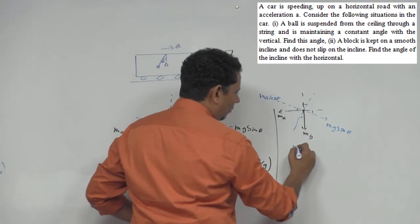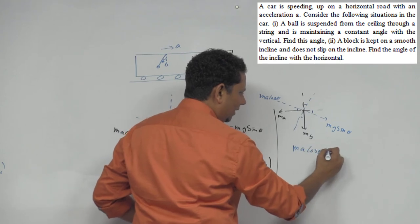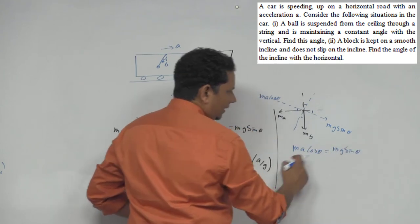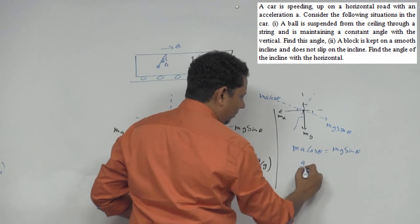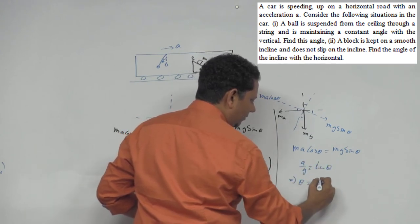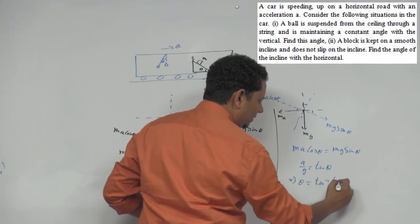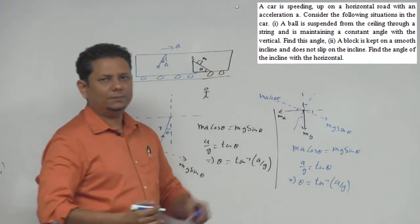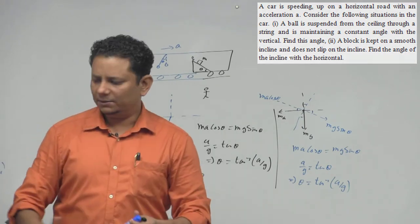Which implies ma cos theta will be equal to mg sin theta. M will get cancelled, a by g will be equal to tan theta, which implies theta will be equal to tan inverse a by g. So in both cases, the angle will be equal to tan inverse a by g.